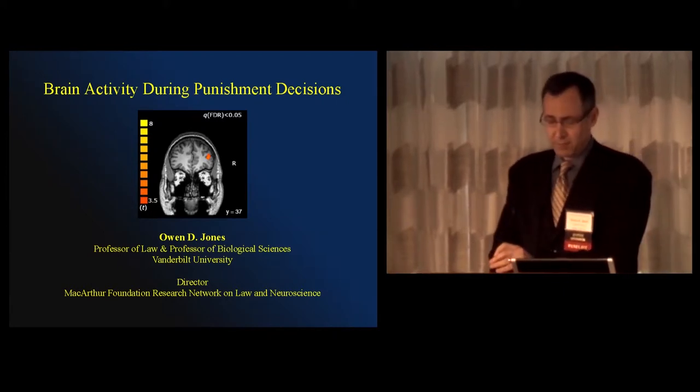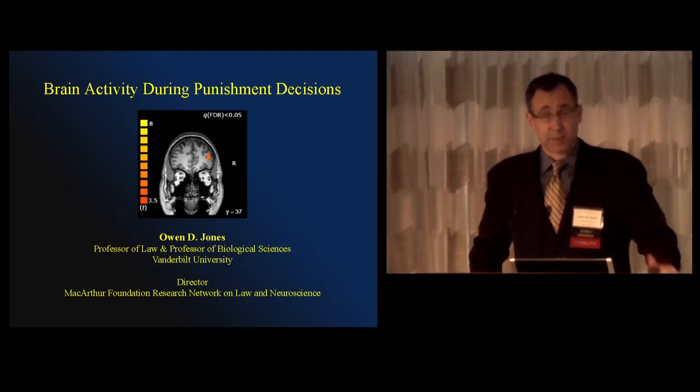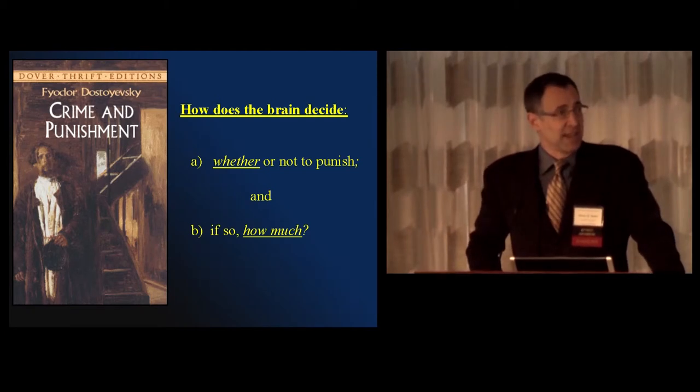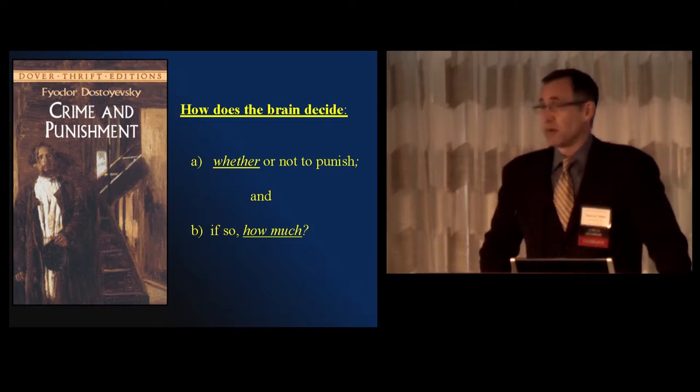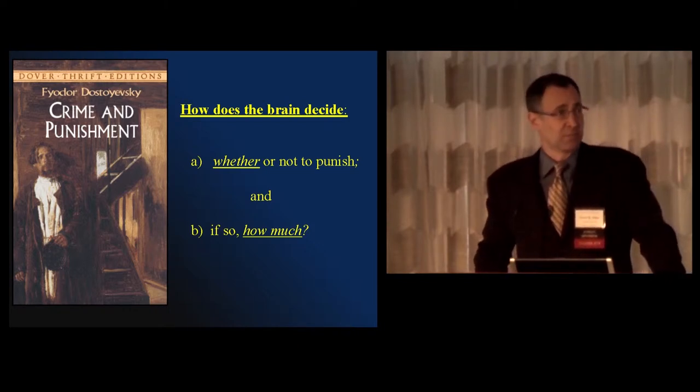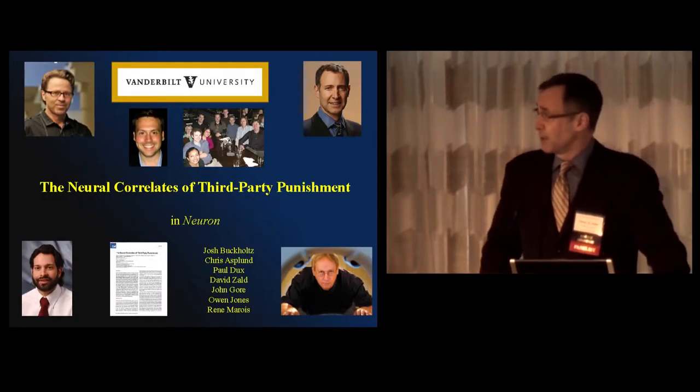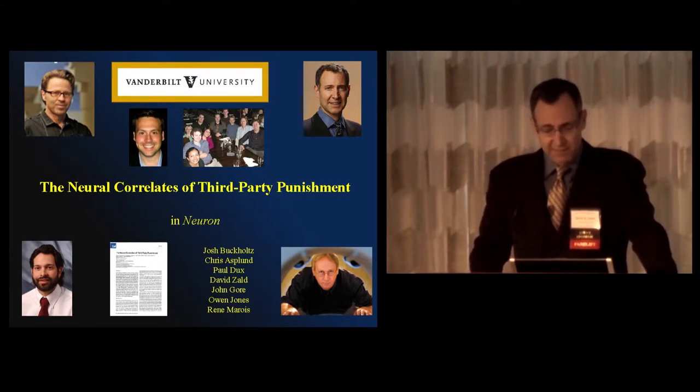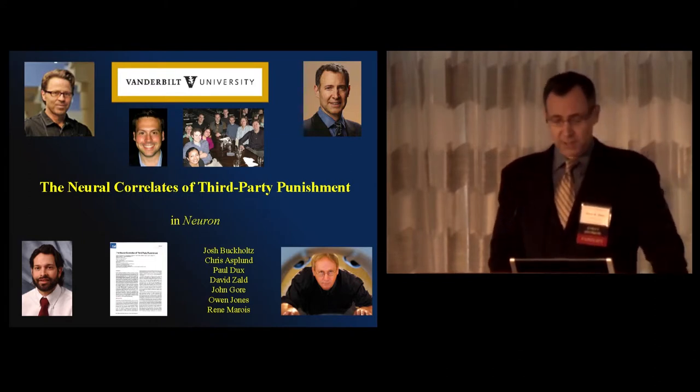So this all started when I and a colleague, René Marois, at Vanderbilt were exploring the possibility of using neuroscientific techniques. And we started with this question straight out of Dostoevsky. Basically, he didn't put it quite this way, but how does the brain decide whether or not to punish someone, and if so, how much? So that was our question, and the exploration was going to be whether or not neuroscience could help us. We ultimately put together a large interdisciplinary team. Not only René, but added Josh Buchholz, now at Harvard, David Zald, John Gore, and a number of others. In pursuit of this topic, the neural correlates of third-party punishment, and this is the experiment I'm going to be talking about today.